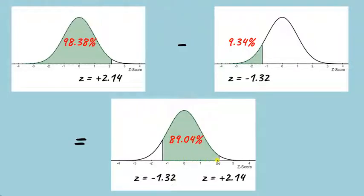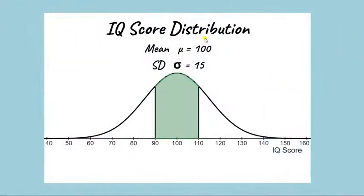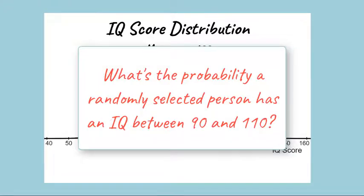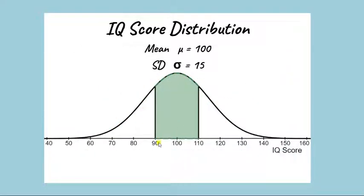Of course if we want to do this for raw scores assuming we believe we have a normally distributed population then we have to convert them to z-scores. So let's say that we're looking at a distribution of IQ scores with a population mean of 100 and a standard deviation of 15. I might ask what's the probability that a randomly selected person from the population will have an IQ between 90 and 110. To figure this out first we need to convert these raw scores of 90 and 110 into standard deviation units or z-scores. So the formula for a z-score is the raw score minus the population mean divided by the standard deviation.